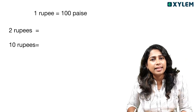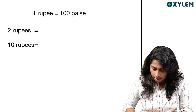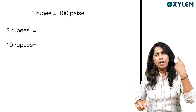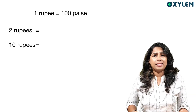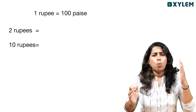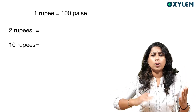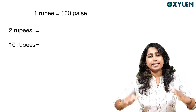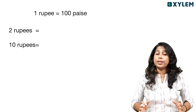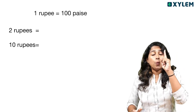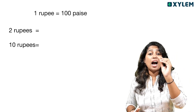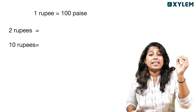This is the currency: 1,000 rupees. How much is 1,000 rupees? 1,000 rupees is 100,000 paise. 100 paise makes 1 rupee.